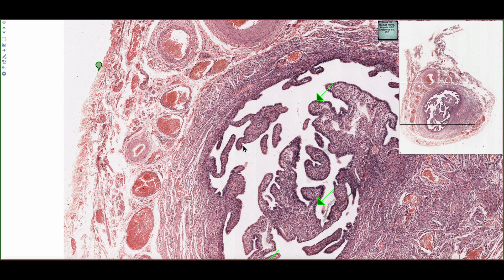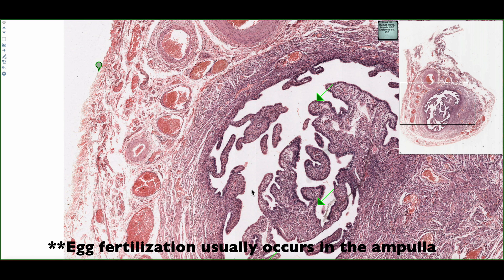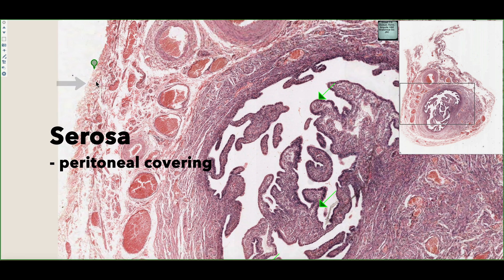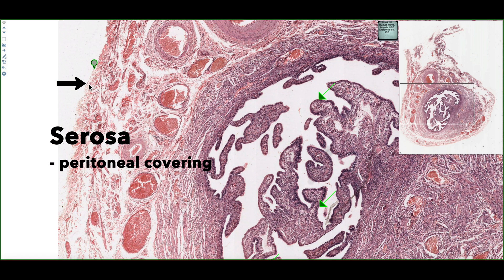In this tissue section, we can see the ampulla region of the oviduct. The ampulla region is closer to the ovary than it is to the uterus. On the left-hand side of the screen, we can see a layer of simple squamous epithelium. This is called the serosa, and is essentially the peritoneum that forms the broad ligament.